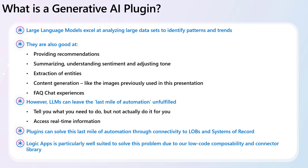However, LLMs can leave the last mile of automation unfulfilled. For example, you can ask an LLM how to accomplish a specific task and it might enumerate a series of actions you should perform — step one, step two, step three. All it's really done is assign you homework. If you didn't know what you needed to do, there's value there, but there's still an opportunity to further improve productivity through automation.